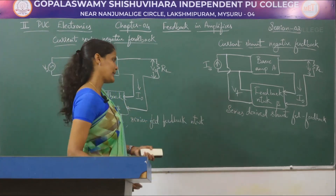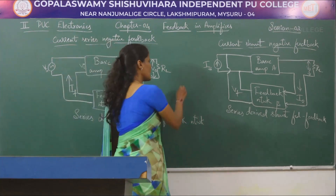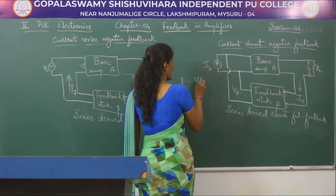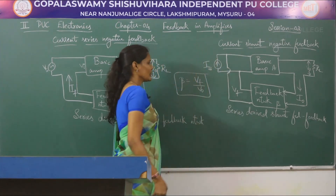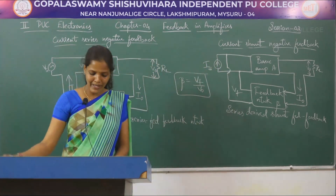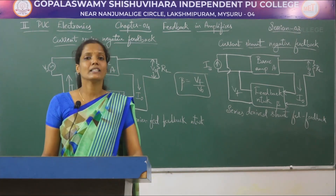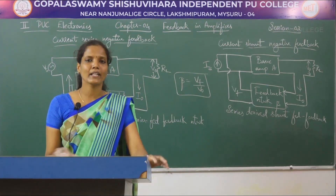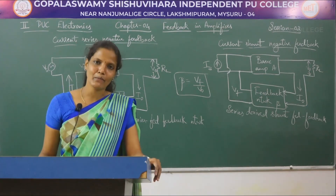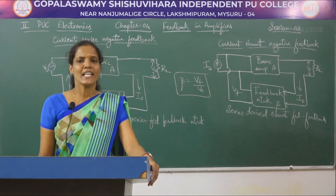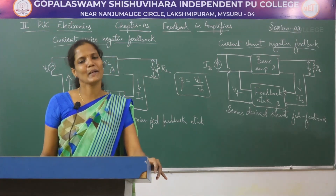In all the feedback networks, beta is always equal to VF divided by V0, which is nothing but the feedback ratio, or feedback factor, or feedback fraction. So we have seen all four different types of negative feedback network. In my next session I will be coming with a new topic. Until then, take care. Bye-bye.